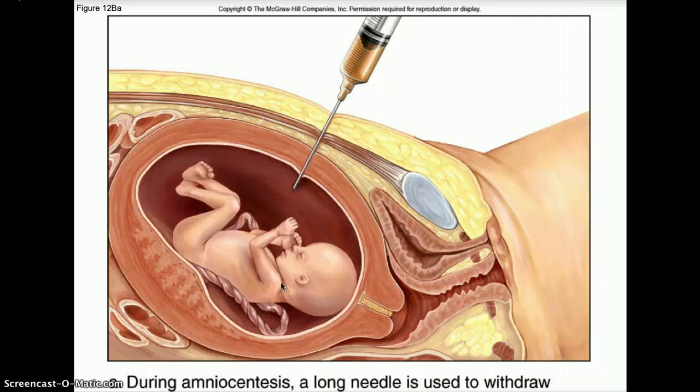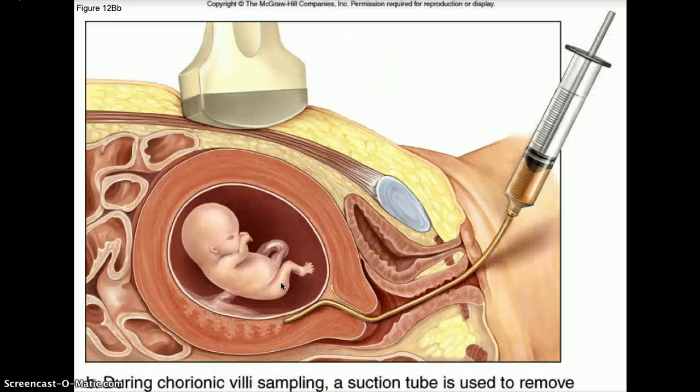There are methods used during pregnancy to test fetal cells. One is called amniocentesis, where a long needle is used to withdraw cells from the amniotic sac, and those fetal cells can be examined for particular genetic disorders. The other type is called chorionic villus sampling, where a suction tube is used to extract some fluid from where the placenta would develop, which can also be used to test for genetic disorders during pregnancy.